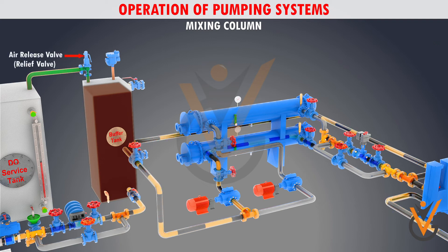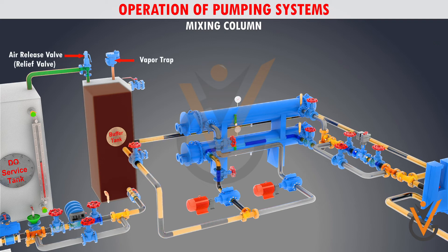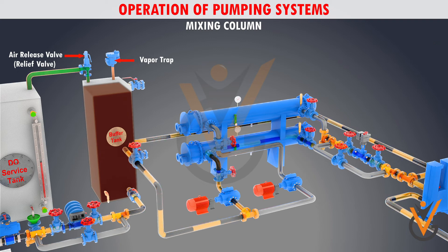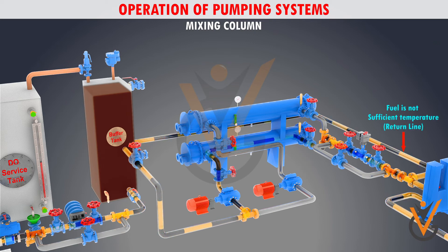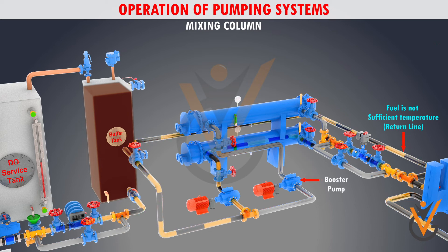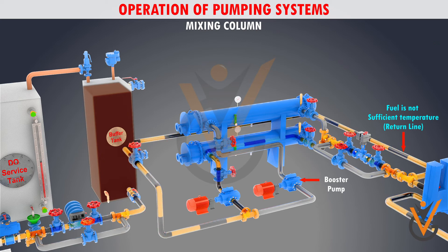The mixing column is filled up with diesel oil. An air release valve or vapor trap is fitted because any pressure rise in the system will be released by the relief valve to the fuel service tank. It also prevents vapor lock by venting out the fuel. From the mixing tank, the fuel is then passed through the booster pump. Booster pumps are used to deliver oil to engine-driven fuel pumps.